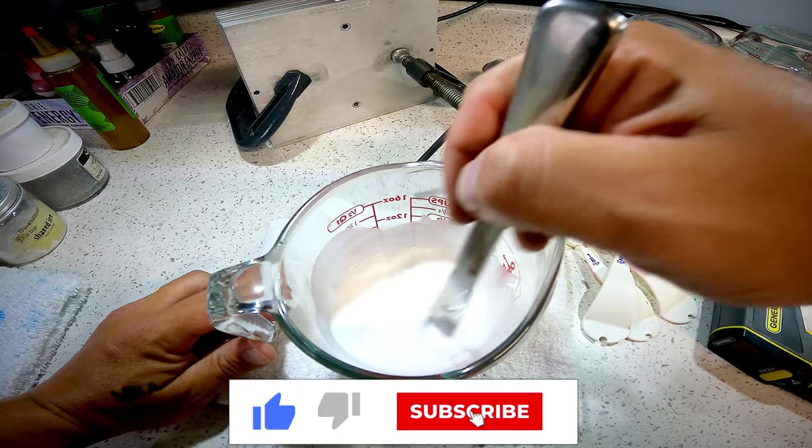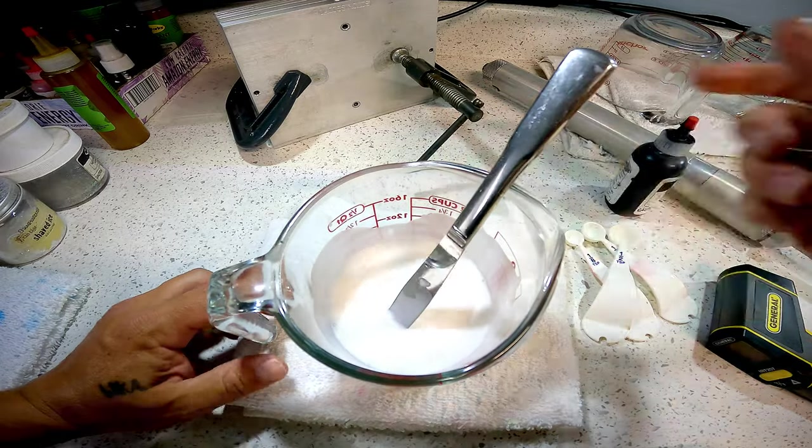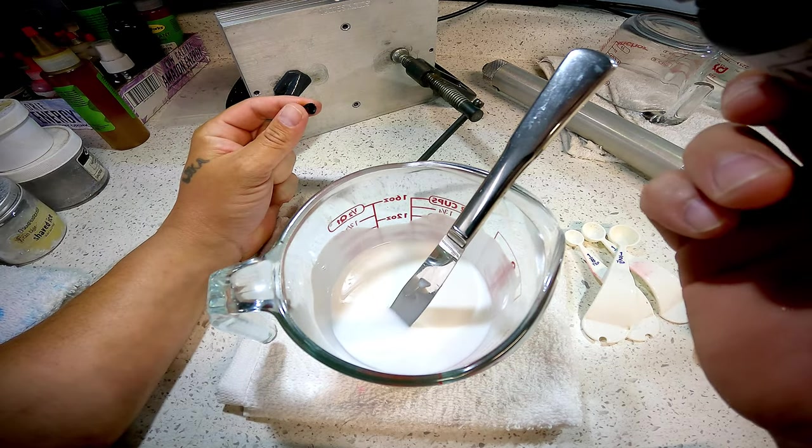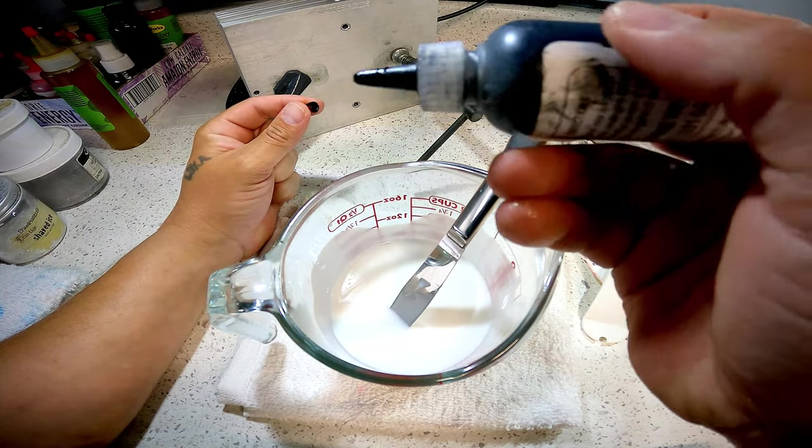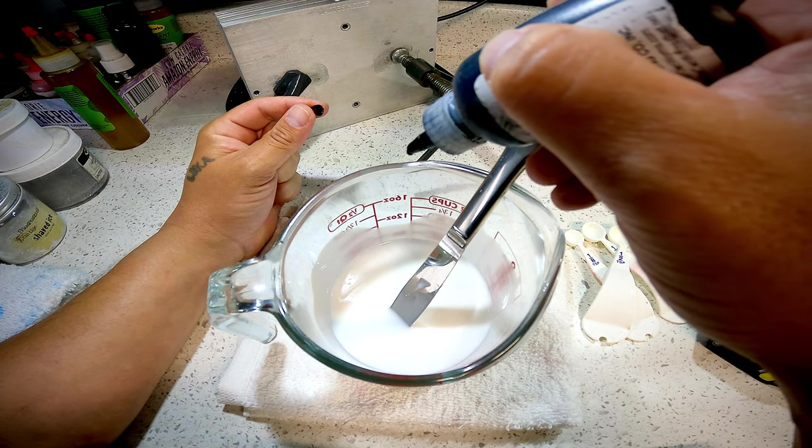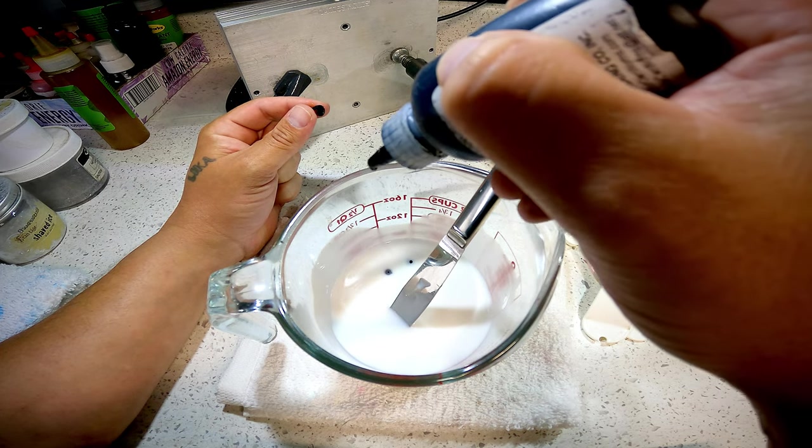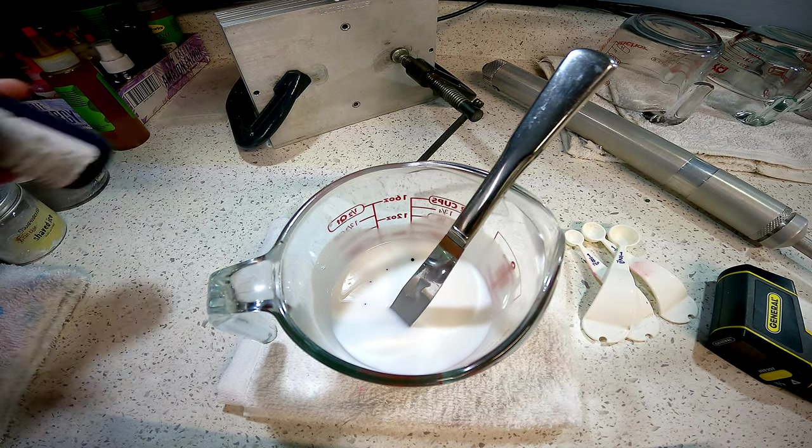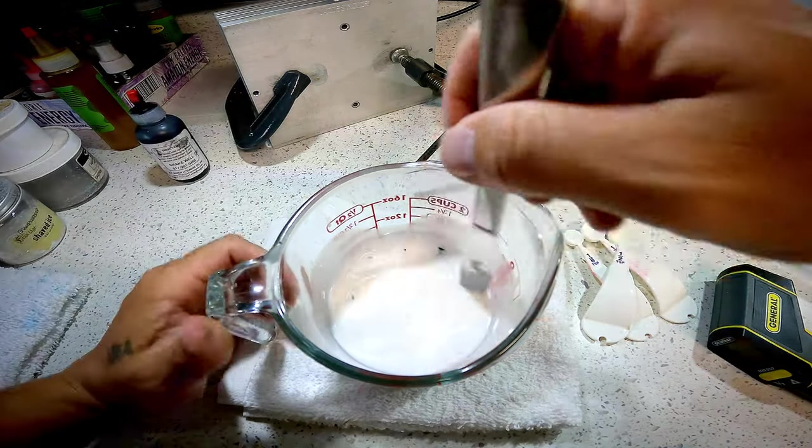I'm just going to mix this up real quick. Next I'm going to add a base, so my base is going to be black, but I'm going to try to do it just light because I don't want the bait to be black.